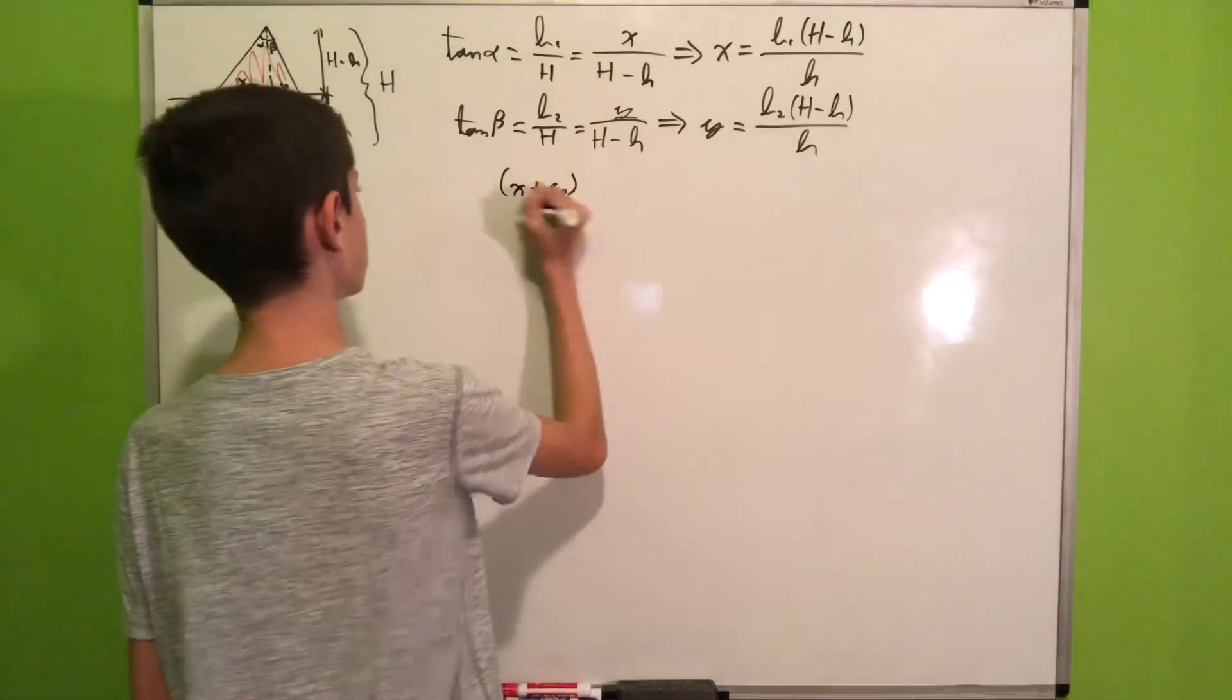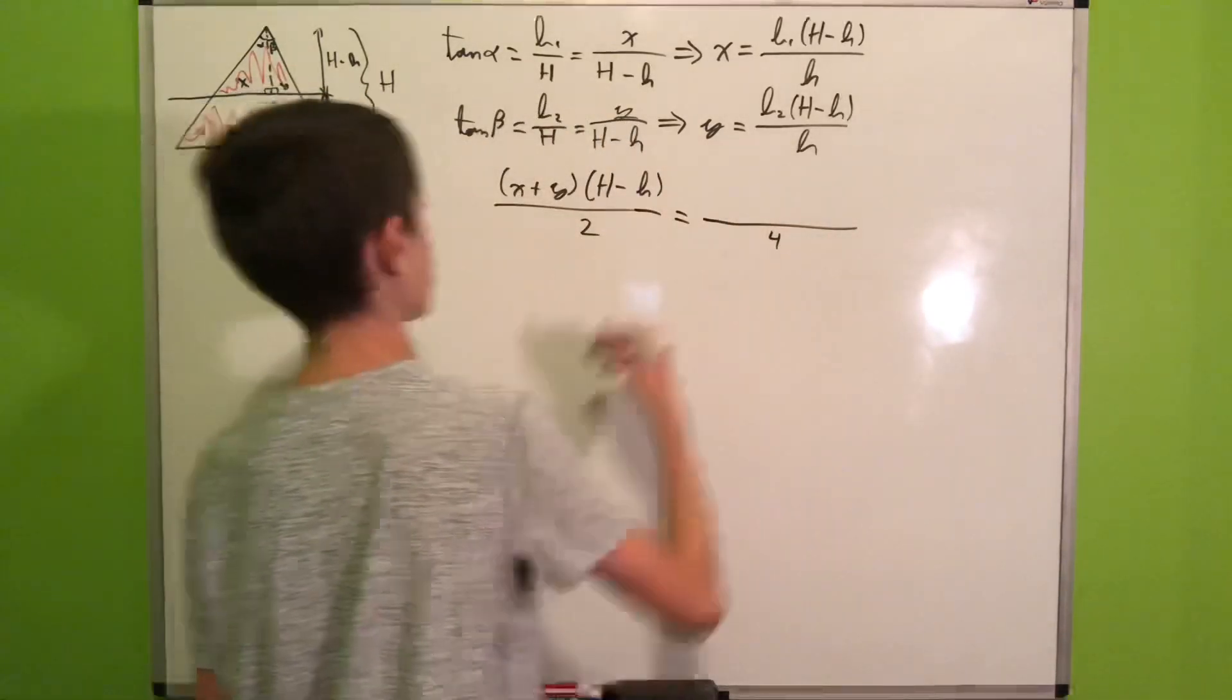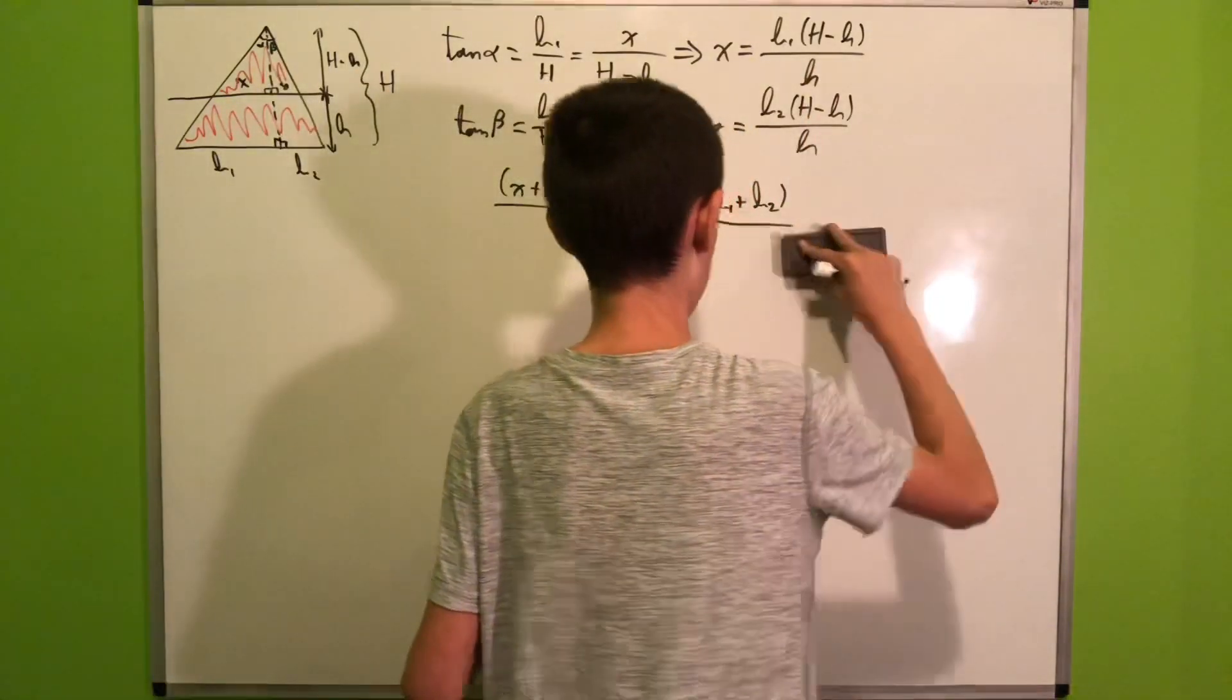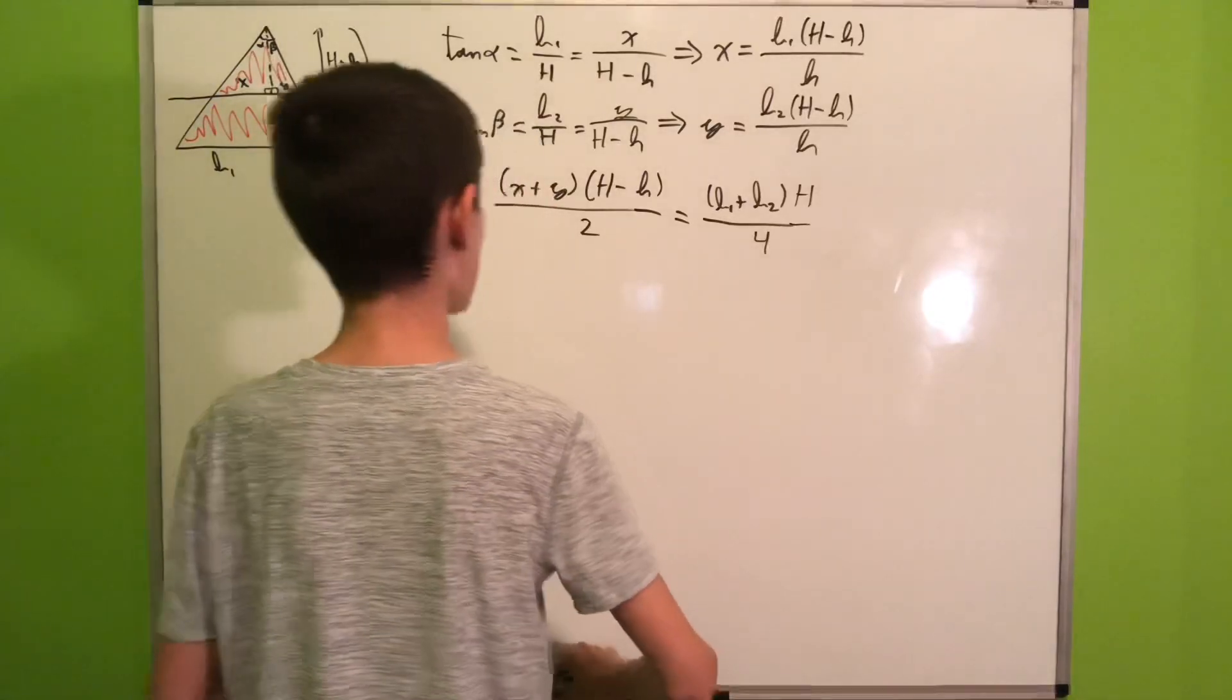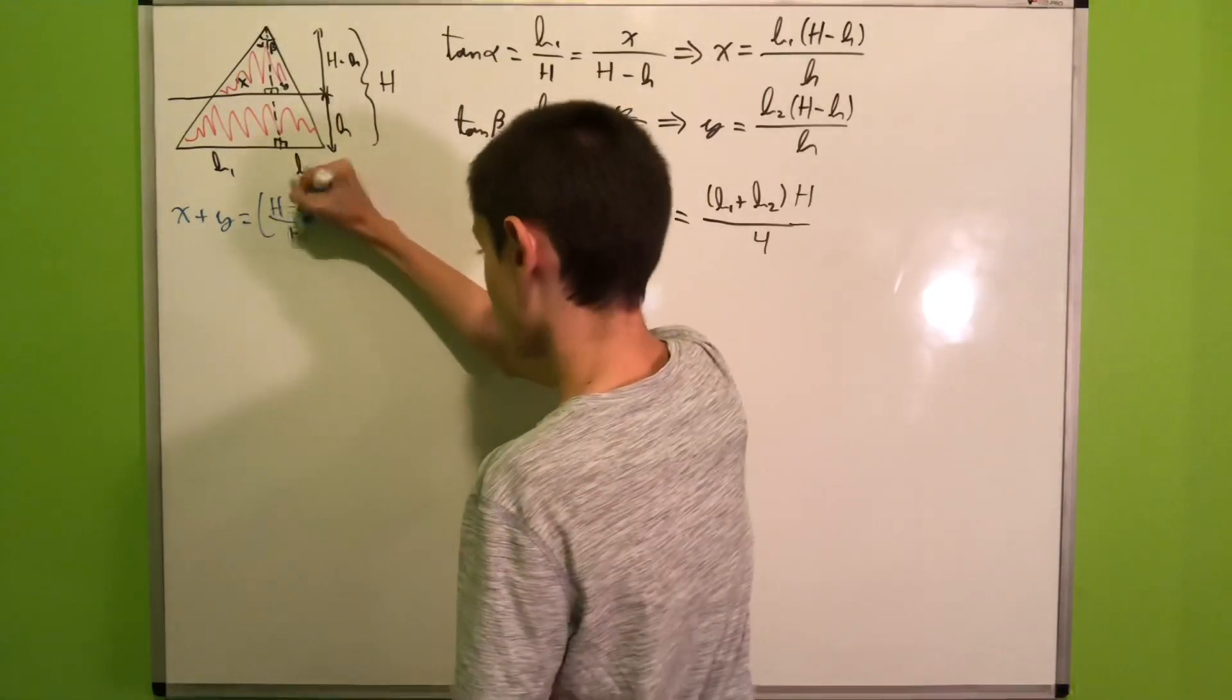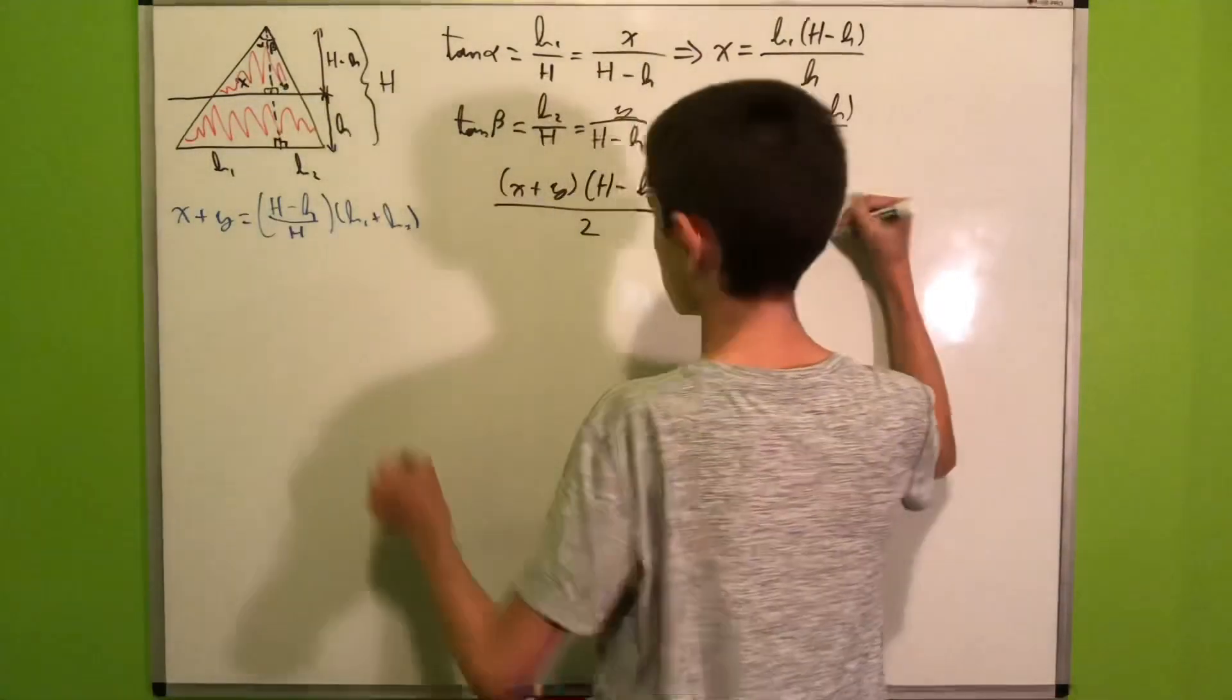So the area of our smaller isosceles triangle will be (x plus y) times (H minus h) all over 2, which is equal to one half times, I write it as all over 4 because one half times one half, we have (b1 plus b2) times H all over 4.